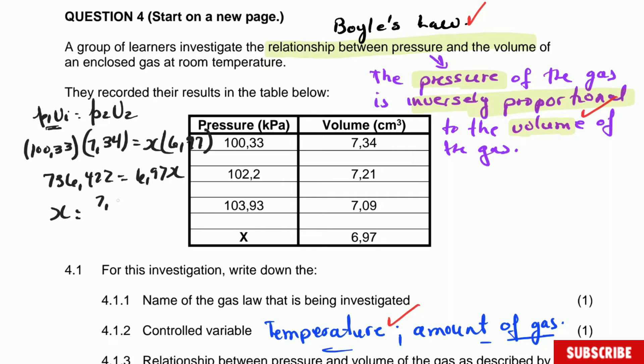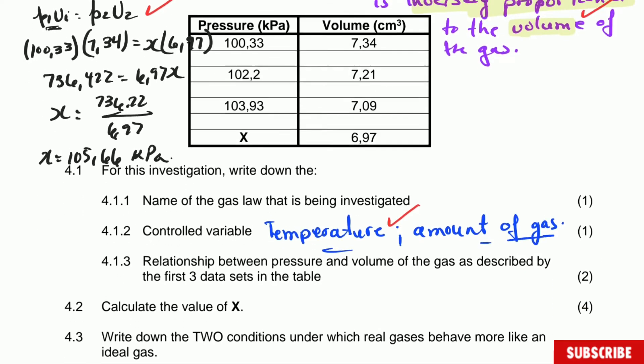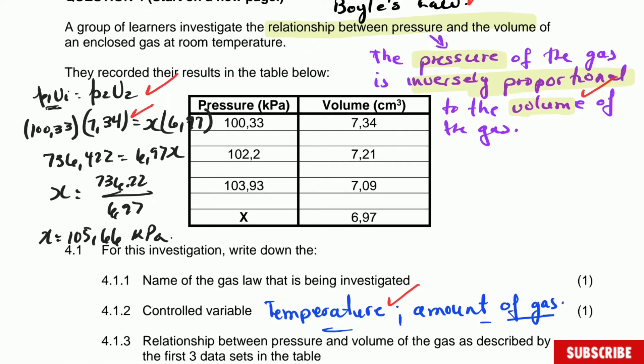So if you do that, it's just math. This gives you 736.422 equal to 6.97X. And when you rearrange, X is equal to 736.22 divided by 6.97, and that will give you the answer which is X equals 105.66 kilopascals.